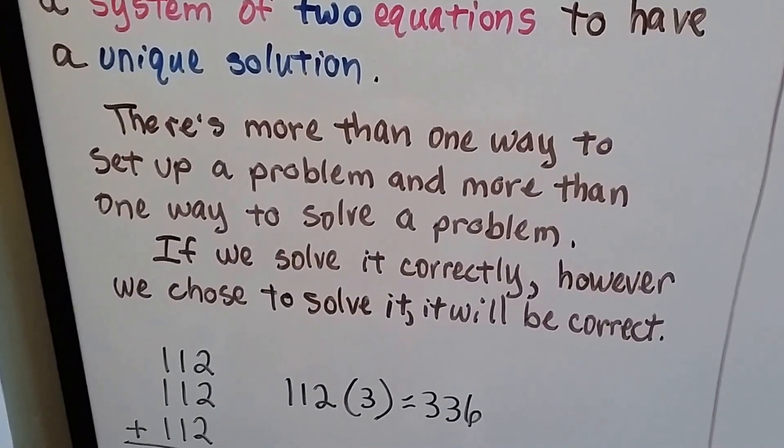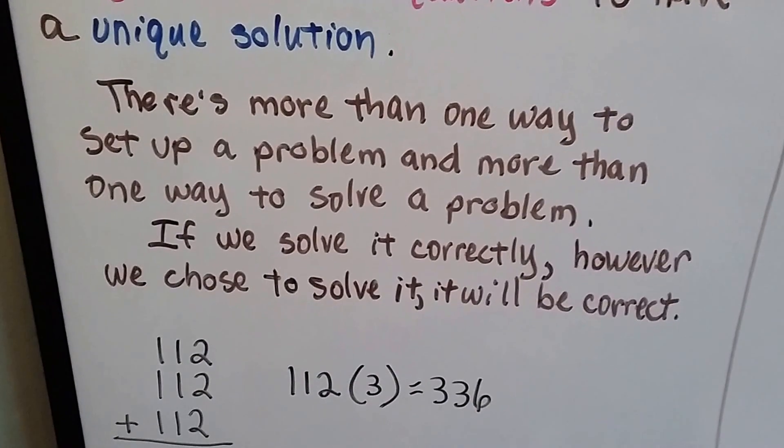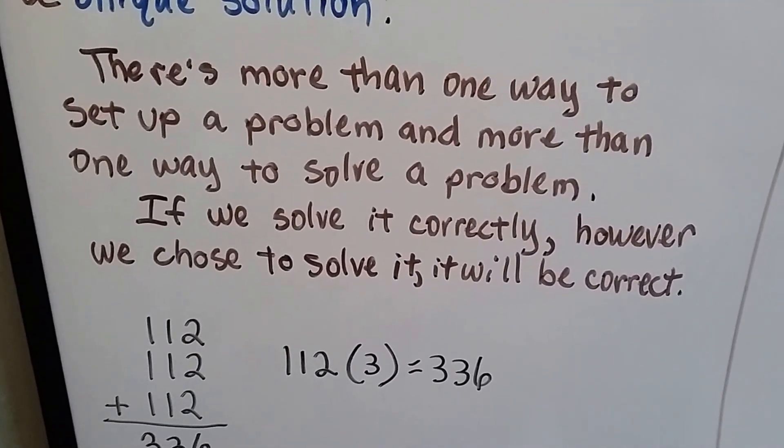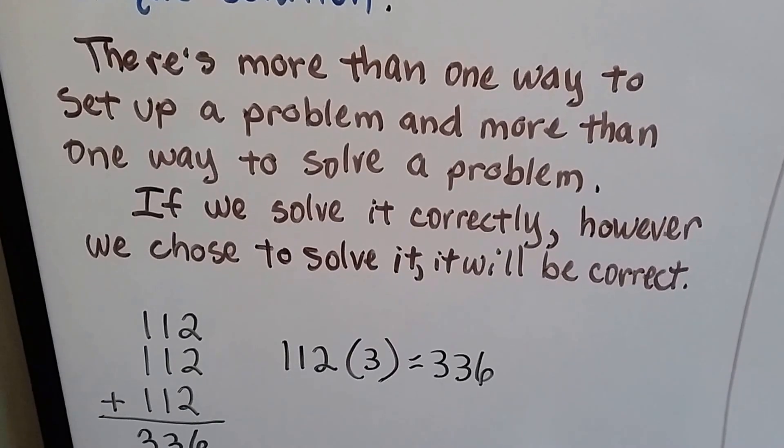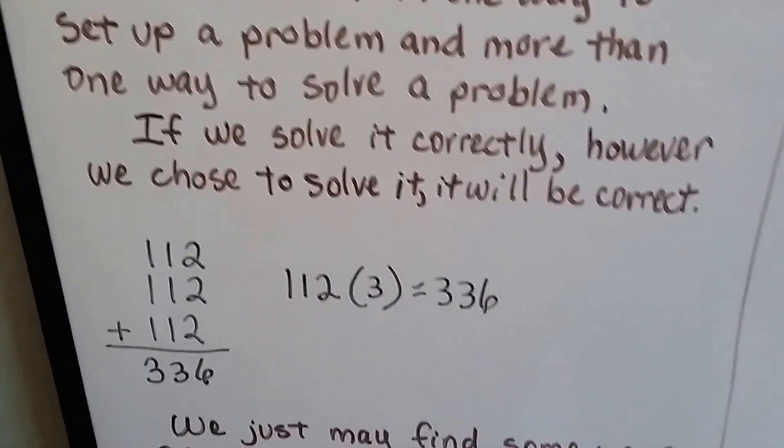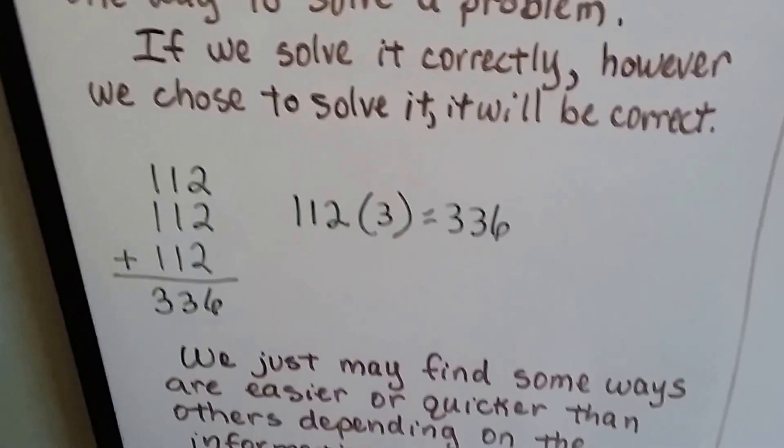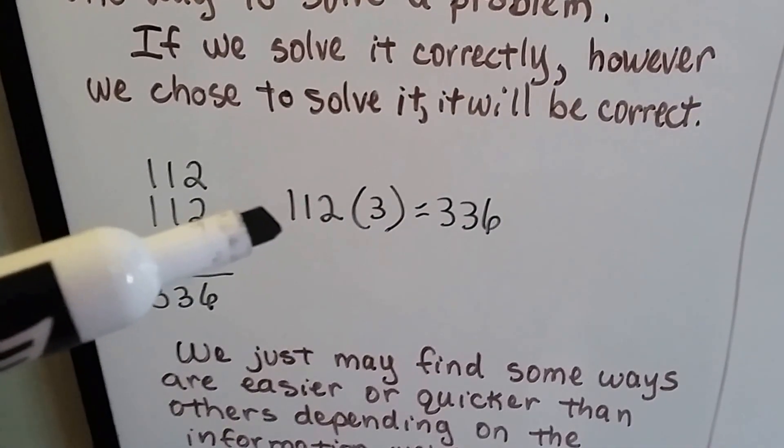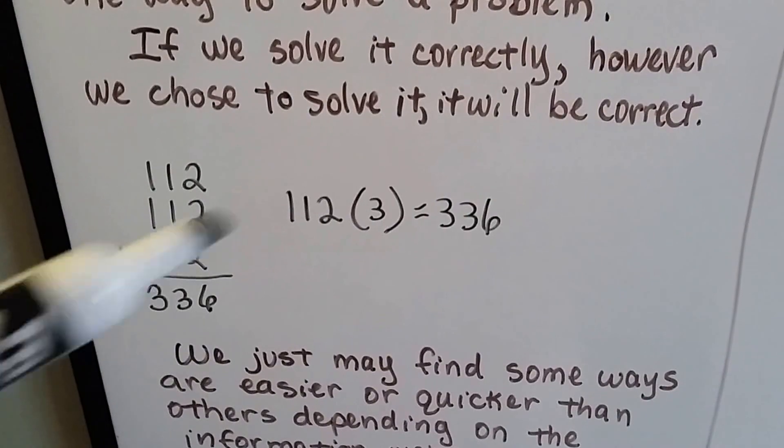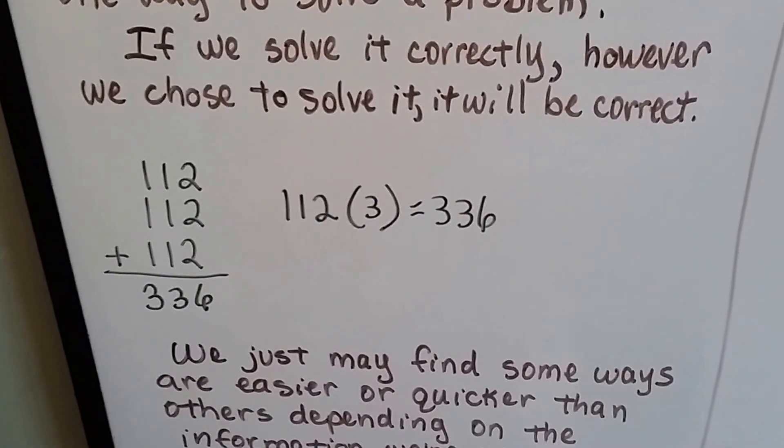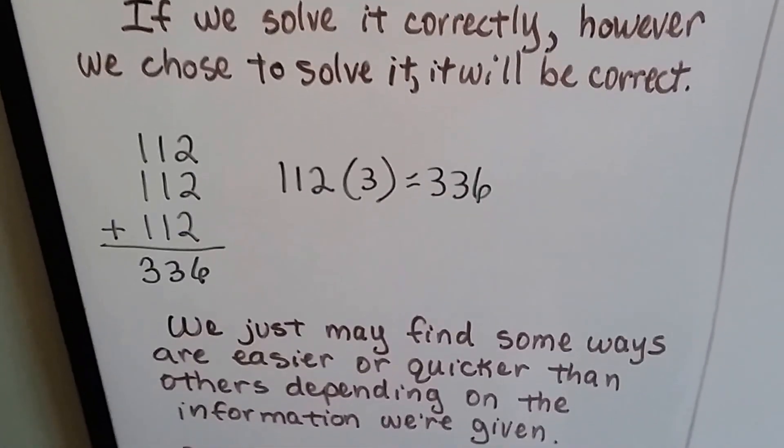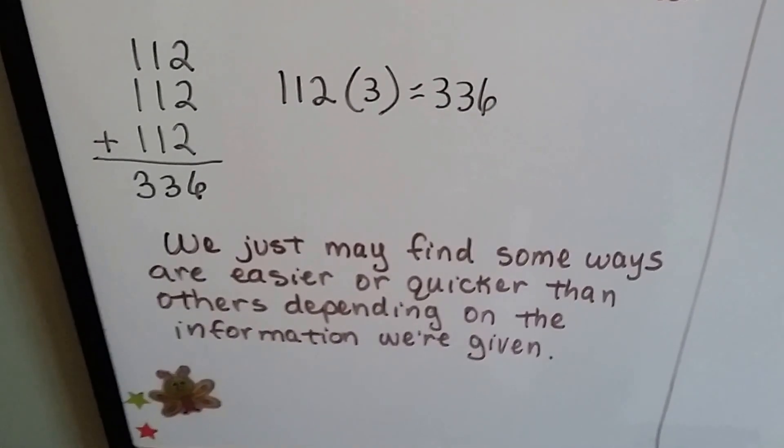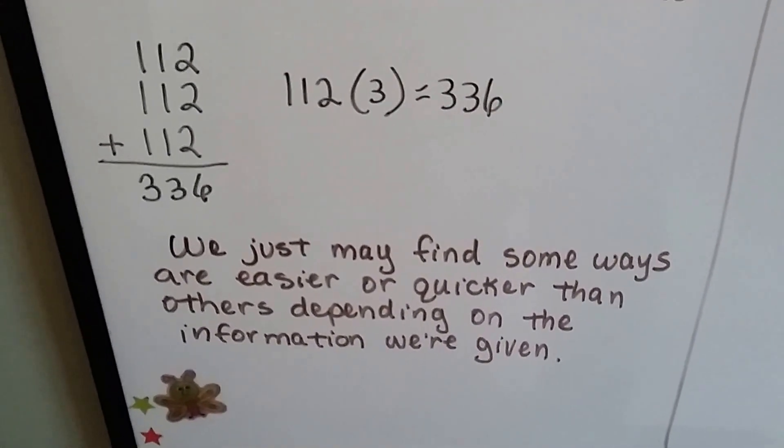There's more than one way to set up a problem and more than one way to solve a problem. If we solve it correctly, however we choose to solve it, it'll be correct. It won't matter whichever way we choose. You can add 112 three times to get 336, or you can multiply it by 3 to get 336. Either way is correct, it's just one might be easier than the other. It's the same thing with word problems. We just may find some ways are easier or quicker than others depending on the information we're given.